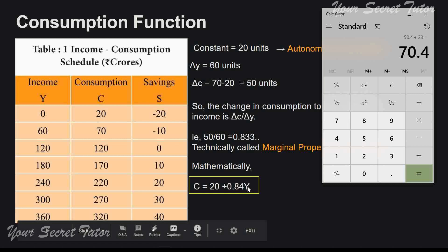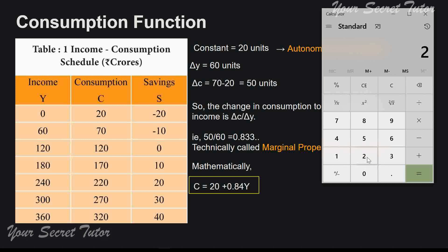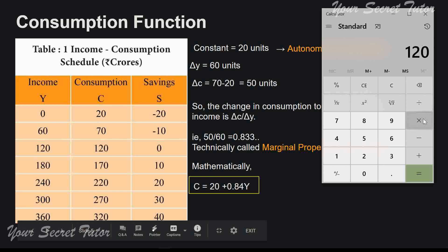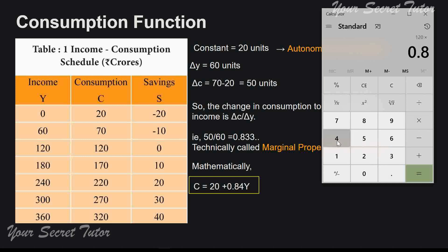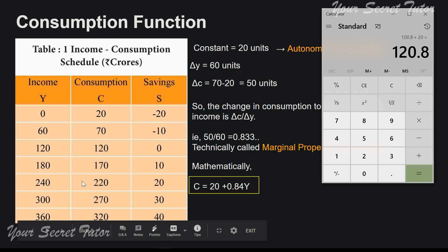For further clarification, substituting Y equals 120: consumption equals 20 plus 0.84 multiplied by 120, which equals 100.8 plus 20, giving us 120.8 — approximately 120. So when income is 120, consumption is also approximately 120. This mathematically expresses our consumption function.